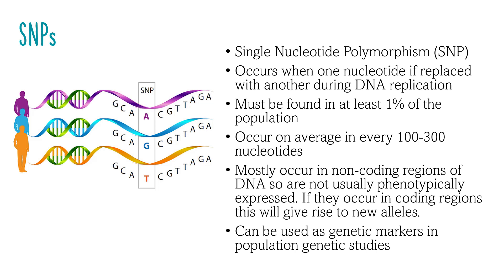If SNPs do occur in coding regions of DNA, such as a region that codes for a protein, they will be expressed and give rise to new alleles. SNPs are important genetic markers used to distinguish individuals and identify traits. A genetic marker is a known DNA sequence at a specific location on a chromosome. There is great variation in genetic markers among individuals within a population, making it easier for scientists to differentiate between them. SNPs are common in humans.